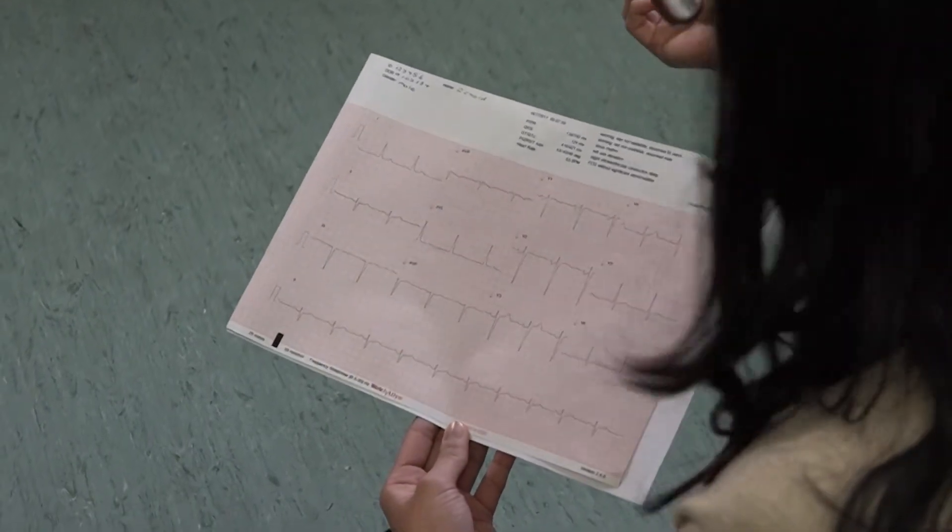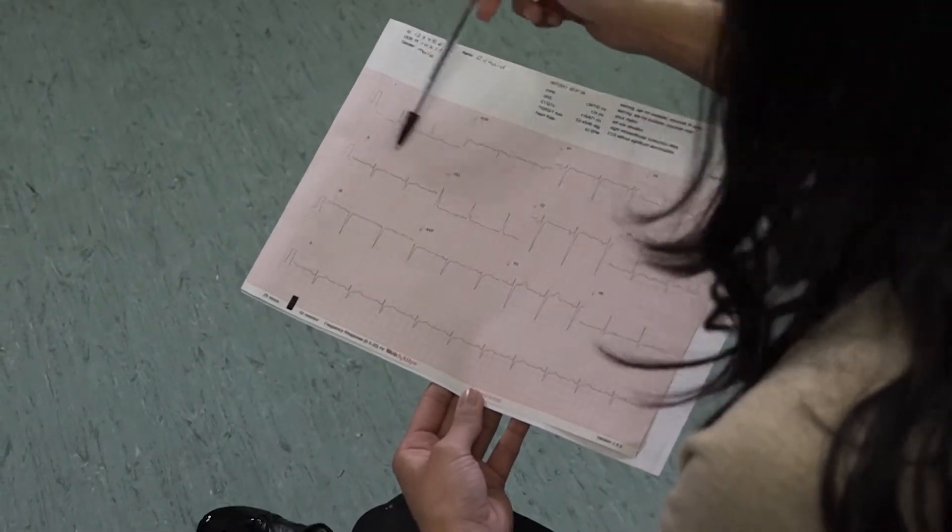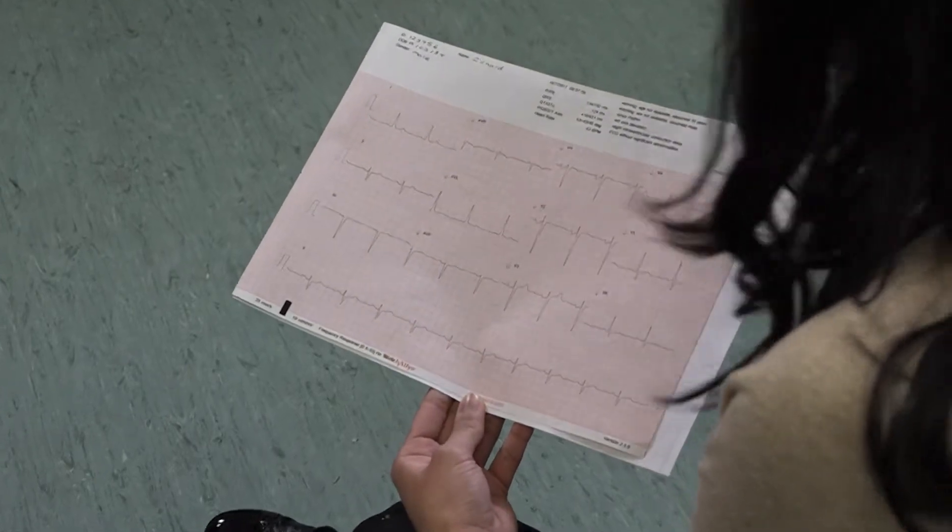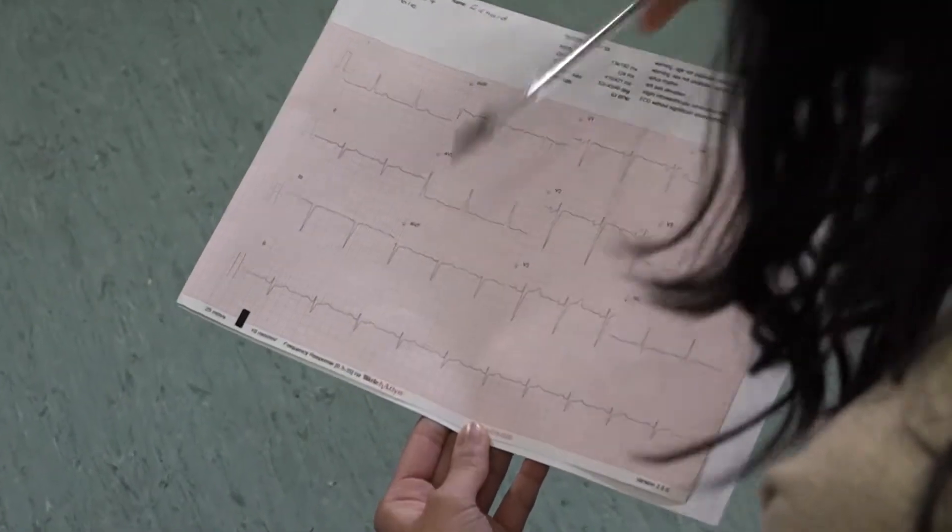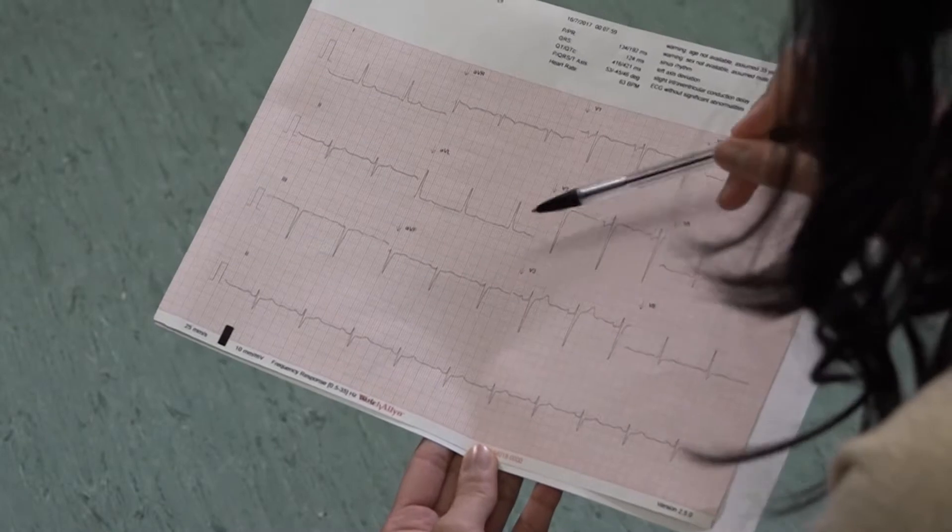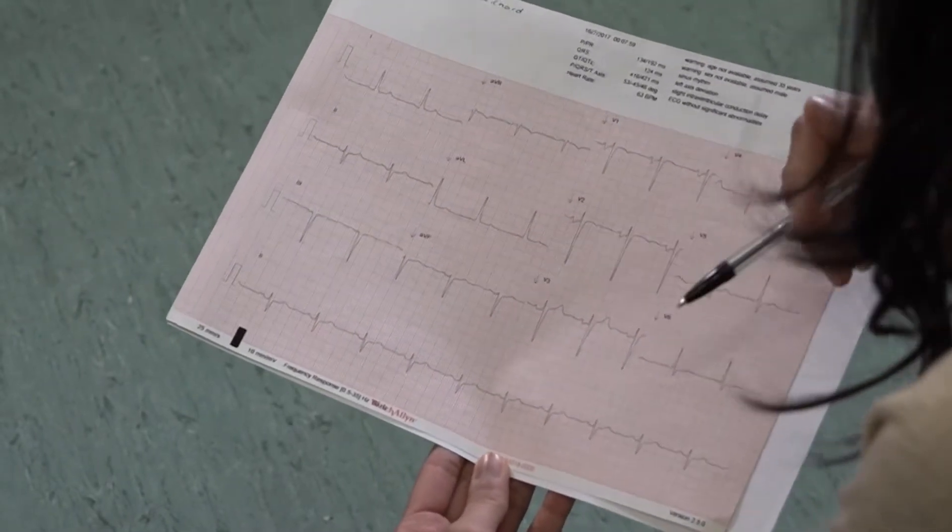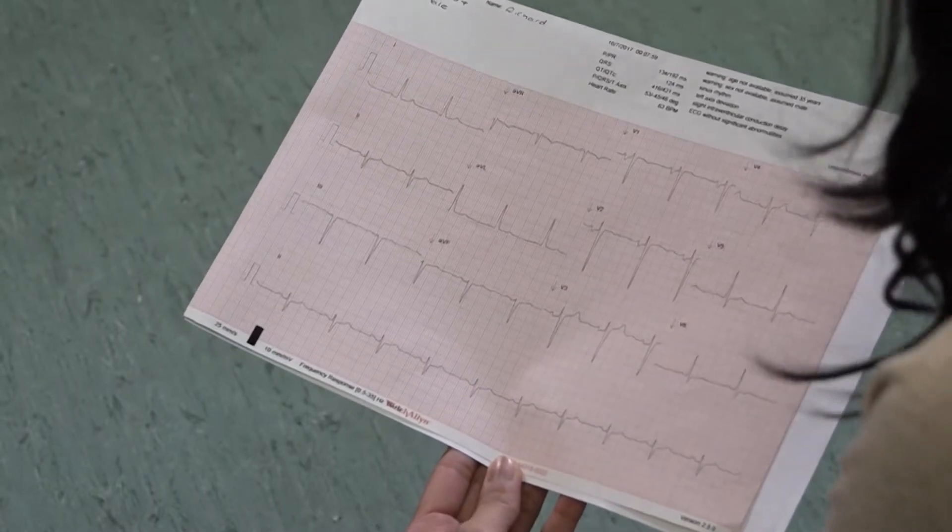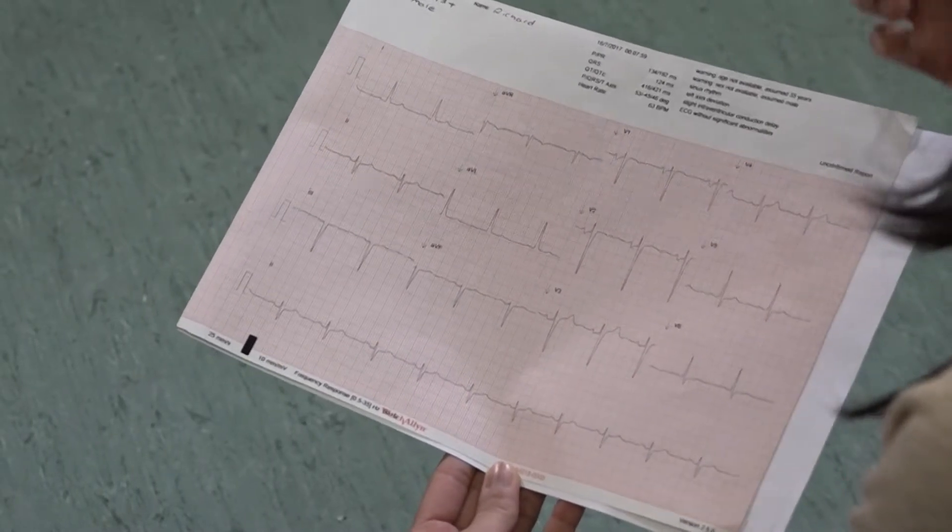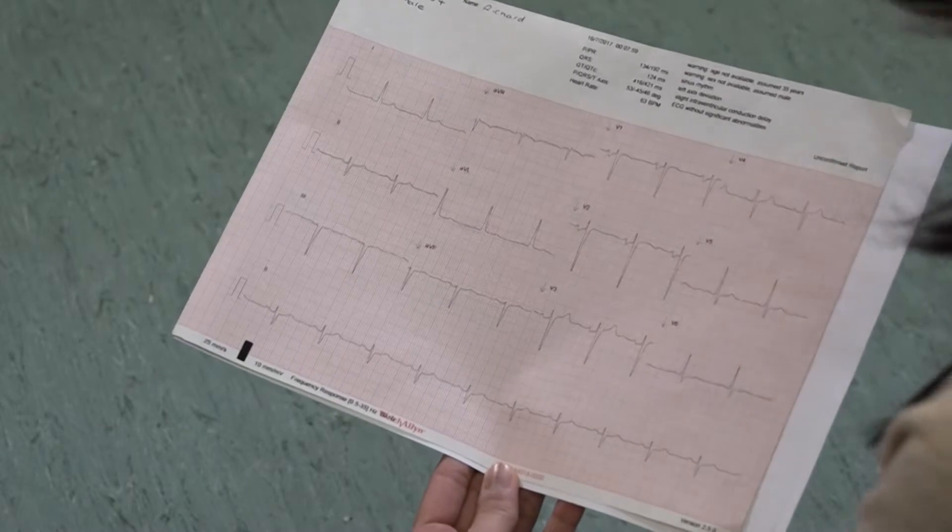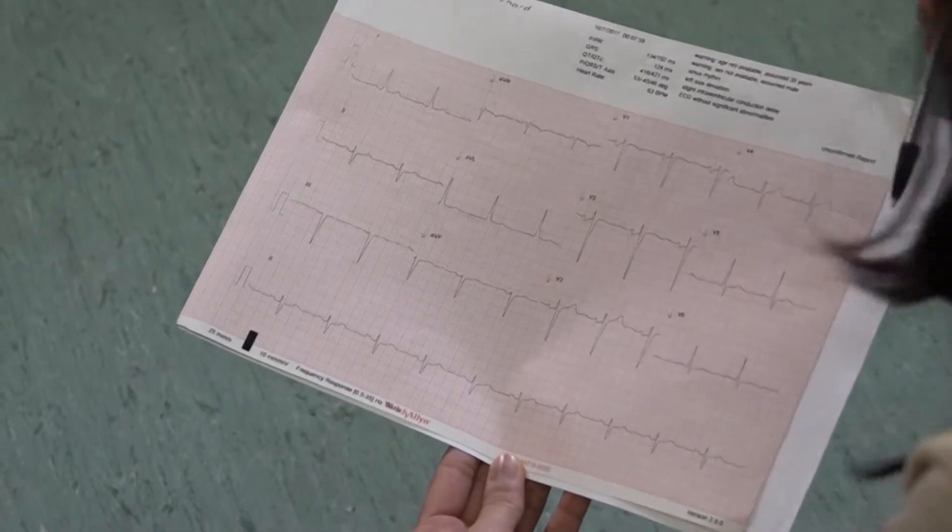As you can see with this ECG, the QRS complexes in leads one are positive and the complexes in AVF are negative. They're pointing downwards. That suggests there is a left axis deviation. With right axis deviation, both the QRS complexes in leads one and AVF are both pointing downwards. They're both negative.